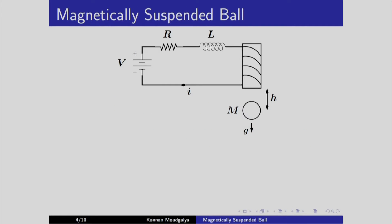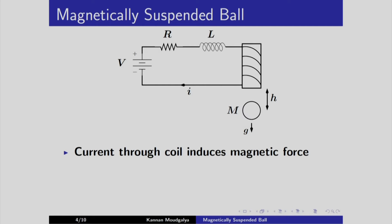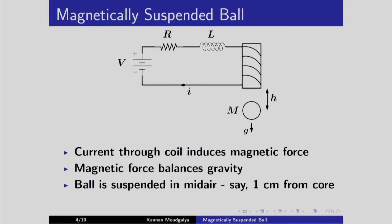Here is the schematic of a magnetically suspended ball. We have a voltage source. It passes through a resistor and an inductor. This coil goes around an armature, and there is a ball that is suspended here. It gets attracted by the magnetic force created through the current passing through this coil. The distance is h. What we will try to do is change the voltage; by changing the voltage, the current changes, the magnetic force changes, and as a result it goes to another equilibrium. The current through the coil induces magnetic force, which balances gravity. The ball is suspended in mid air, say 1 centimeter from the core, and we may want to move to another equilibrium by changing the voltage.